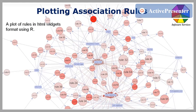Plotting association rules. The plot below shows rules and items in HTML widgets format in R. For instance, the dark red circle at the top is rule 100 and it points to the yogurt item in the blue box.